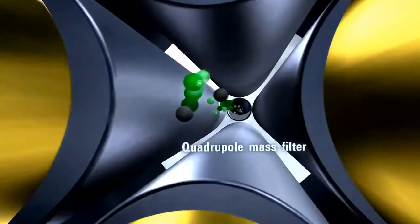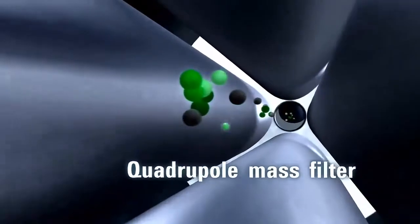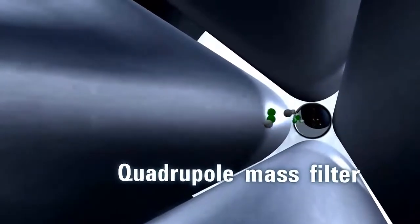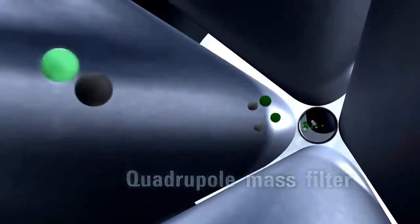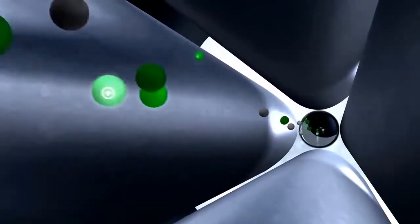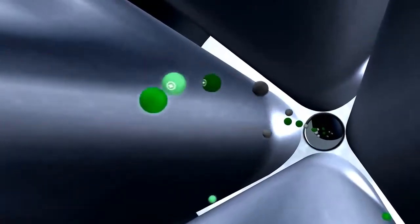The second quadrupole serves as a mass filter for the product ions produced in the collision cell. For a quantitative analysis of a target compound, the second mass filter is operated in a selected ion monitoring mode.